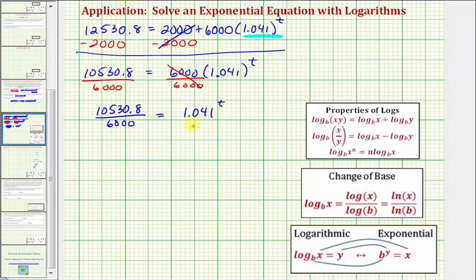Now that we've isolated the exponential part of the equation, we have a choice on how to solve this equation. We could apply the power property of logarithms and then solve for T. Or we can write the exponential equation as a log equation and then apply the change of base formula. For this example, we'll write the exponential equation as a log equation and then use the change of base formula. To do this, we need to be able to identify the base, the exponent, and the number.